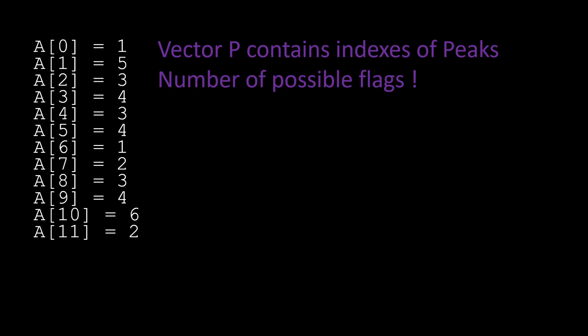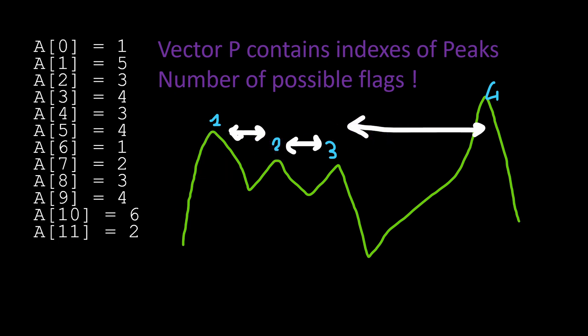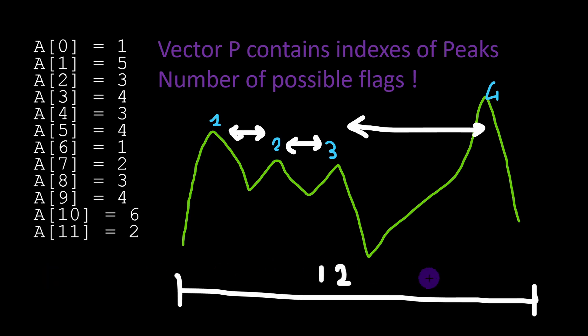Next we have to start by guessing the number of possible flags. With respect to the distances separating the peaks, if we have an array of 12 elements, the maximum number of flags is limited by the square root of the length of the array. This is a key idea in the solution — and if you've watched the two previous videos of lesson number 10 about prime and composite numbers, this particular point will be much easier to understand.